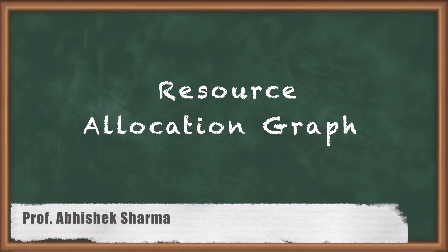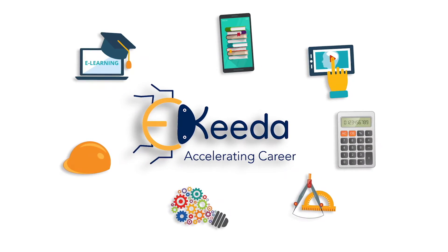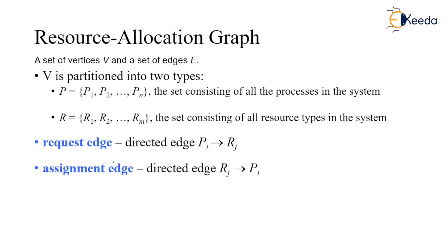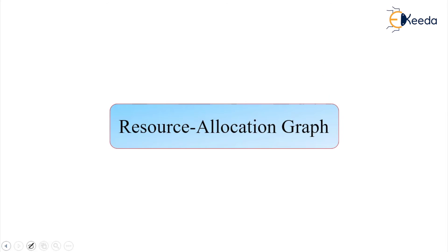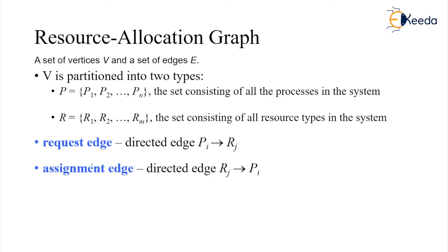Hello friends, in today's class we are going to talk about resource allocation graph. We are talking about resource allocation graph — this is the graph depicting how each process utilizes the resource. There is a request part, a use part, and a release part, and in that context we are looking at this resource allocation graph.